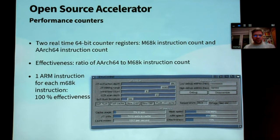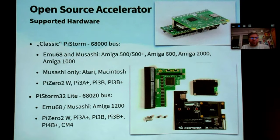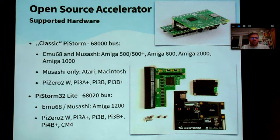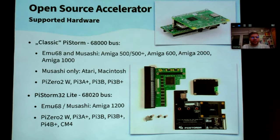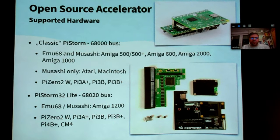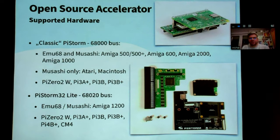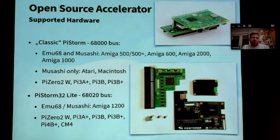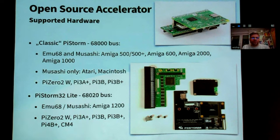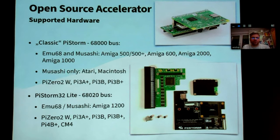Now let's get back to PyStorm and Mo68 together. During the last AmiWest, basically only the classic PyStorm for Amiga 500 was existing. It's still supported. The classic PyStorm works on the 68000 bus and can be installed in Amiga 500, 500+, 600, 2000, and 1000. It allows you to use Raspberry Pi 02 and Raspberry Pi 3 in all variations. If you use Musashi — the interpreter previously used by PyStorm, which is the one using Linux — you can also put this PyStorm in Atari or Macintosh computers.